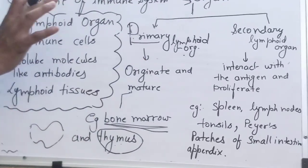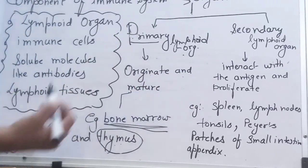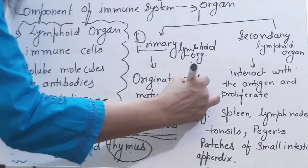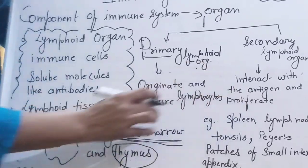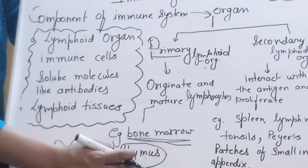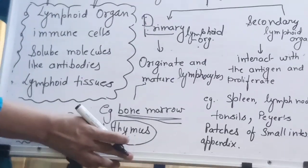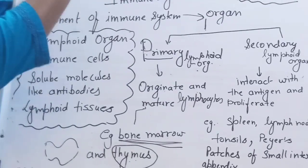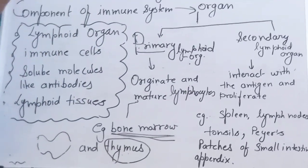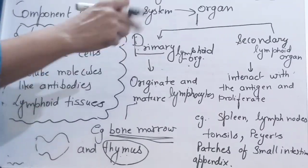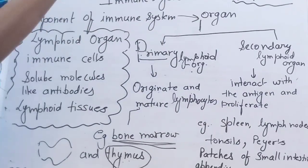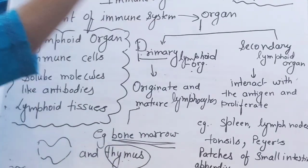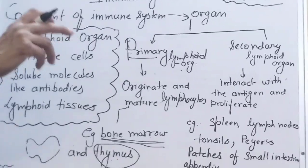The primary lymphoid organ is where lymphocytes originate and mature. Examples are bone marrow and thymus. Secondary lymphoid organs are where things are produced, go into the body, and mature in different parts. They are produced in primary organs, but maturation continues there. During the defense mechanism, when an antigen attacks, antibody production starts — this is the secondary lymphoid organ's role.